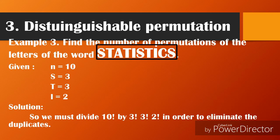Example number 3: Find the number of permutations of the letters of the word STATISTICS. The total number of letters is 10. We must divide 10! by 3!, 3!, and 2! in order to eliminate the duplicates from the repeated letters.